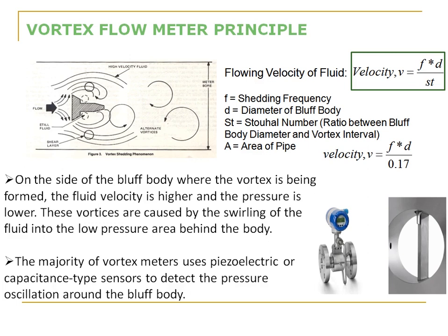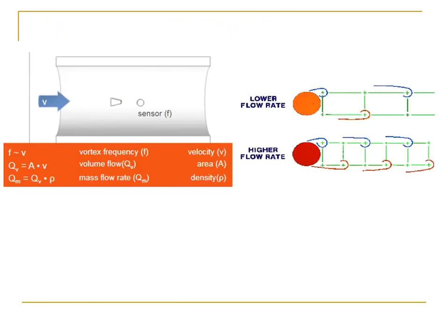On the side of the bluff body where the vortex is formed, the fluid velocity is higher and the pressure is lower. These vortices are caused by the swirling of fluid flow into the low pressure area behind the bluff body. The majority of vortex flow meters use piezoelectric or capacitive type sensors to detect the pressure oscillations around the bluff body, measuring the pressure variation caused by vortex shedding, which is related to the velocity of the fluid flow.